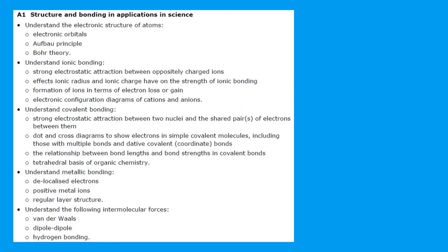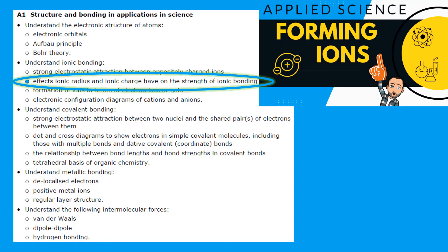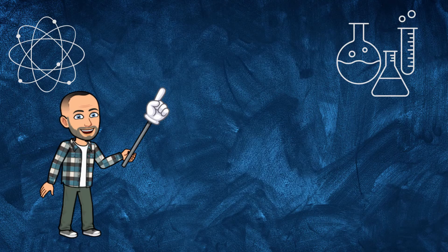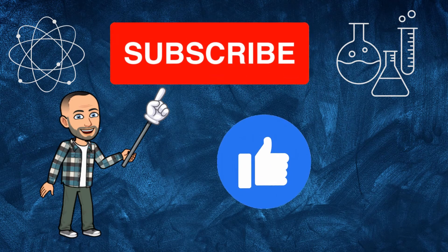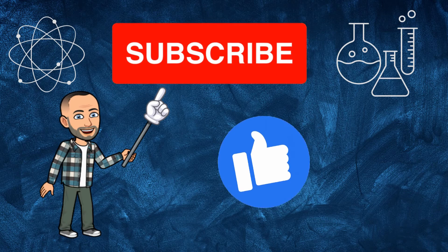Hi there, welcome to my channel on chemistry lessons. This is a BTEC Applied Science Unit One video and it focuses on how the ionic radius and the ionic charge affect the strength of the ionic bond. If you haven't seen my previous videos on ions, I suggest you go and watch that first — you'll find a link in the description below. Please make sure you like and subscribe to this channel so we can get them out to as many people as possible.